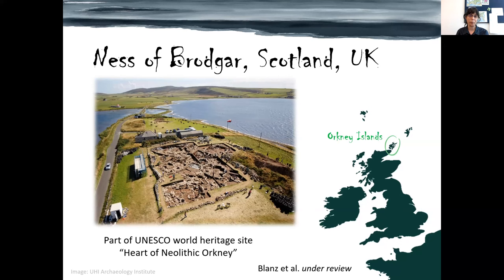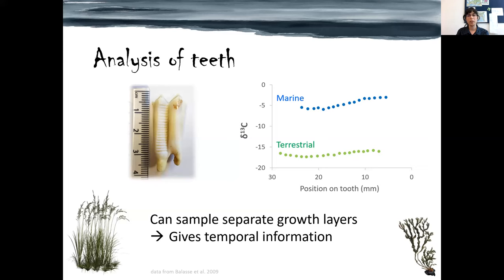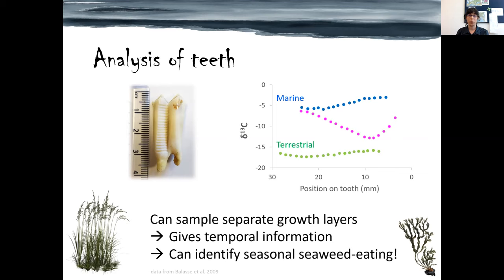Actually, we can do much more than that, because by taking multiple samples from the same tooth, we can look at what time during tooth formation seaweed was consumed. A reference sheep that consumed seaweed in winter and terrestrial foods in summer shows a distinct pattern, and this is also a pattern we found at the Ness of Brodgar, where seaweed was being consumed in winter.